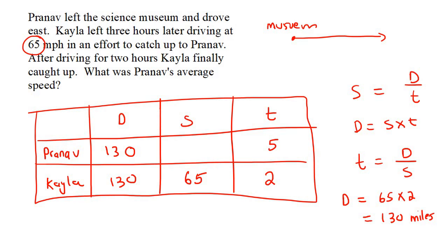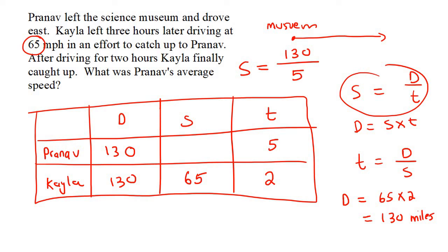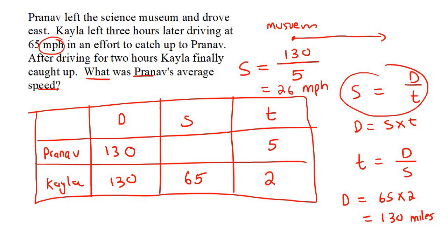We can now work out Pranav's speed by saying speed equals distance over time. So S equals 130 over 5, and if we work that out we end up with a speed of 26. Always use the correct units — they're using miles per hour, so we say 26 MPH. Let's just make sure we've answered the question: what was Pranav's average speed? There we have it — 26 miles per hour.